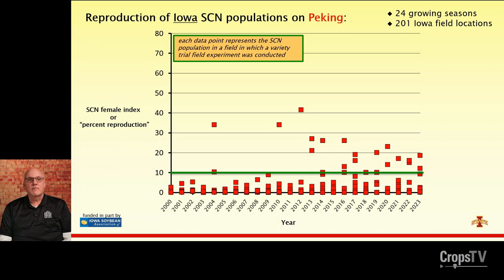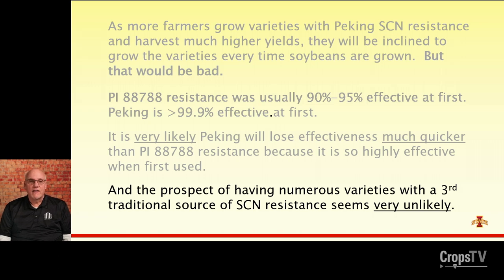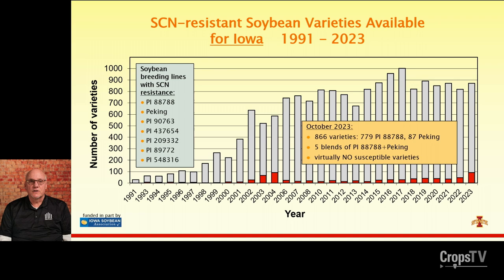The graph showing nematode reproduction on Peking from our experiments reveals that while generally better than the 88788 graph, there are already fields where nematodes show increased reproduction on Peking. I'm also getting reports of SCN females being observed on roots of Peking-resistant varieties. And we don't have a great prospect for a widely available third traditional source of resistance — the 2023 bar graph shows almost everything is either 88788 or Peking. A BT-based novel resistance from BASF was EPA-approved in 2020 and estimated to be available by 2029, but it will be an incremental improvement rather than a broadly available third source.